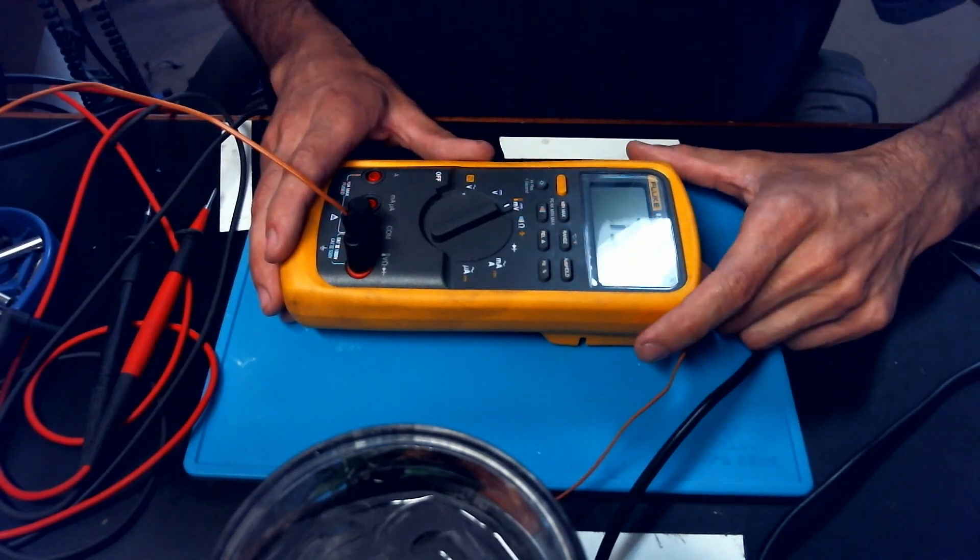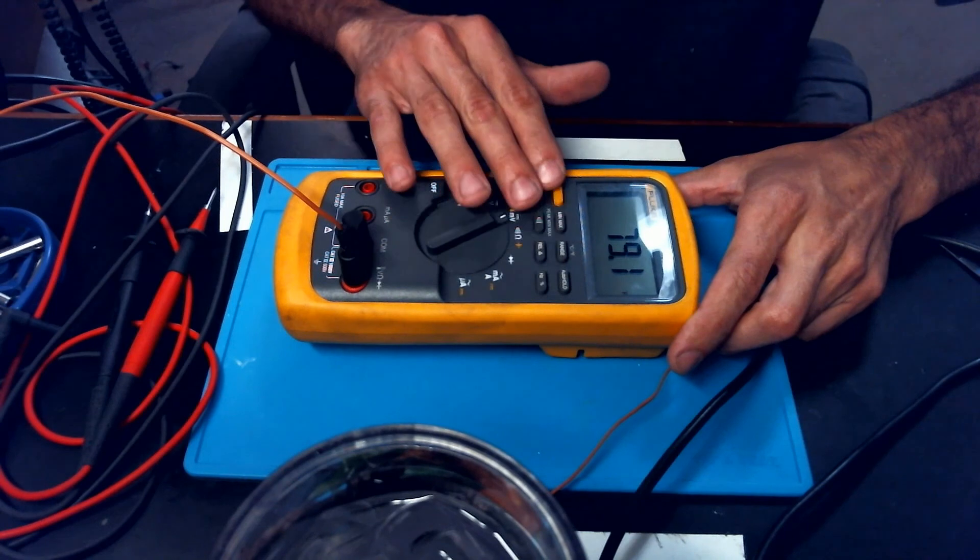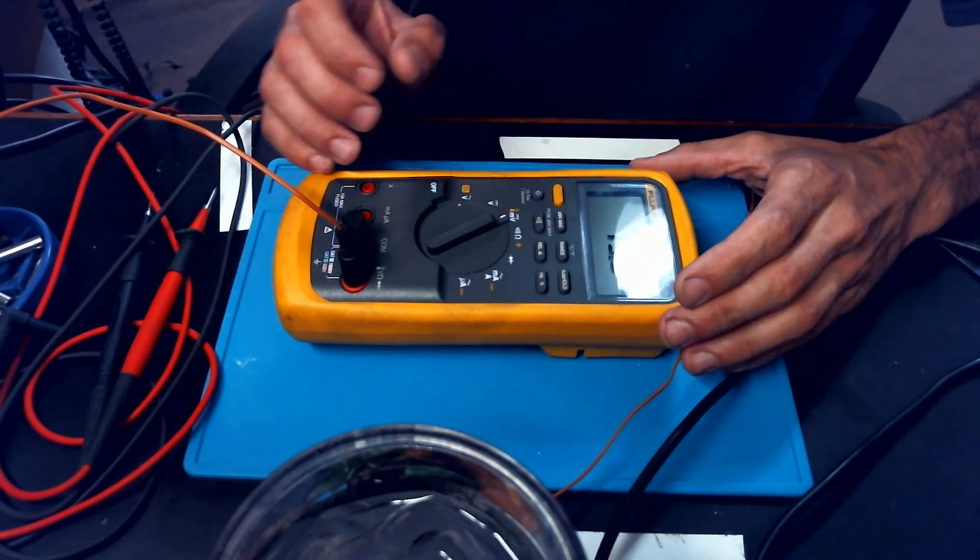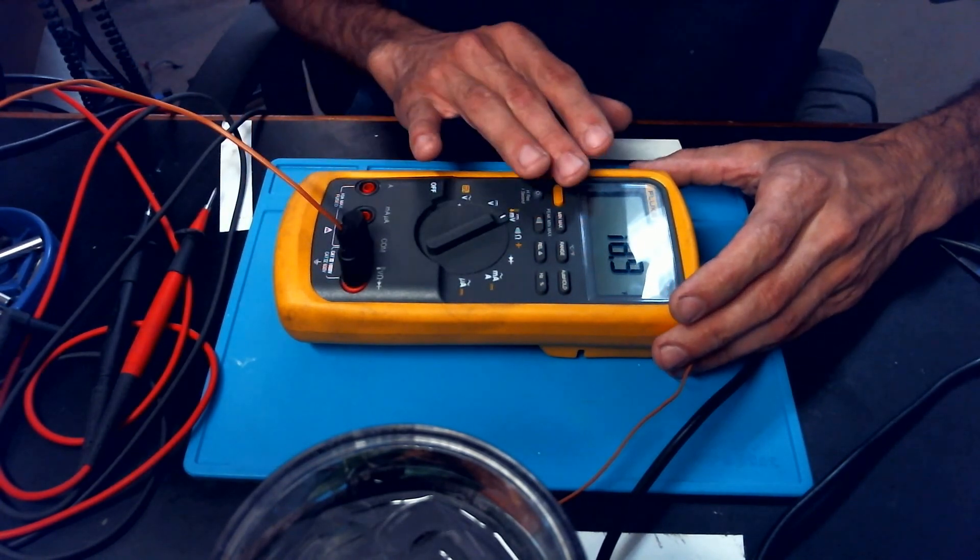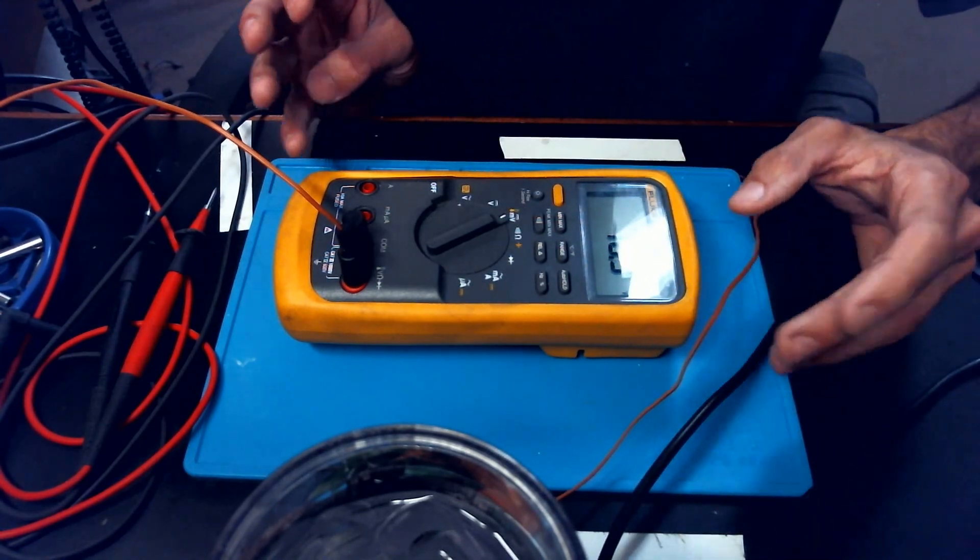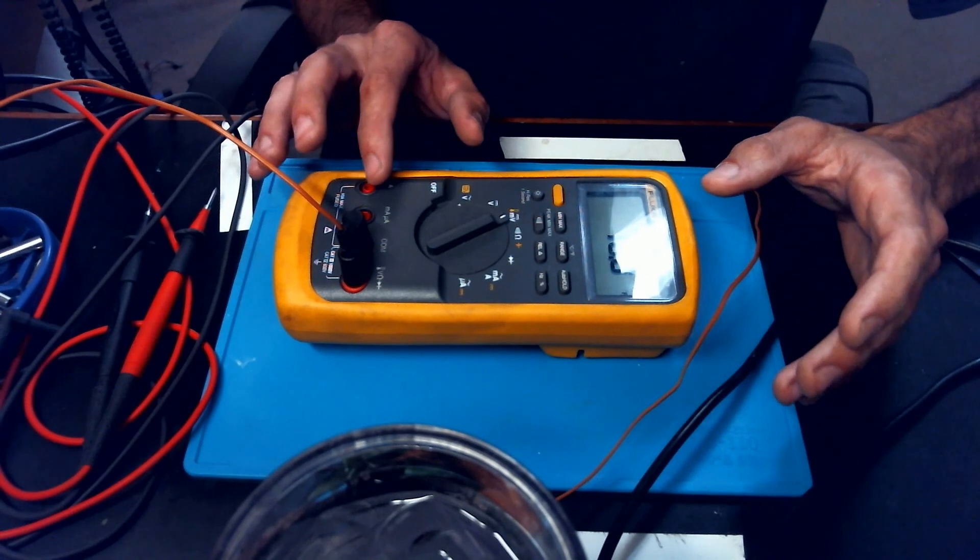So this is going to be the second part of the 87.5 review. We covered a lot of the functions on the button type stuff in the last video, I think just about all of them. So we'll just kind of go through the meter a little bit on some of the measurements and stuff, just to show kind of an ease of use, response times, things like that.